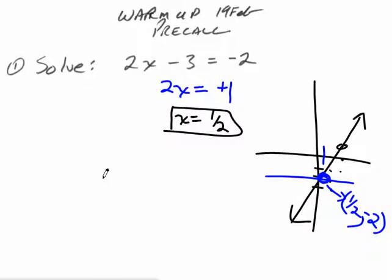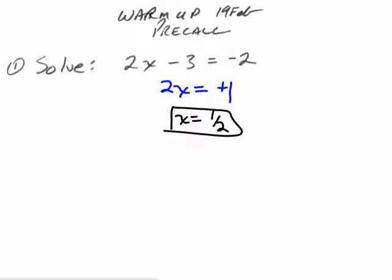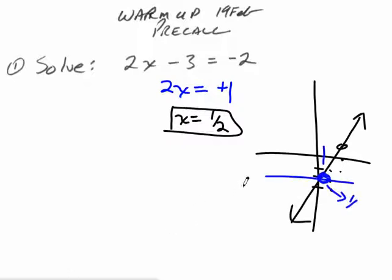The warm-up was: solve 2x minus 3 equals negative 2. And you said that x was one half. Hopefully I don't have to show you that — that works nicely. You could have graphed it too. If you knew how to graph things, you could graph 2x minus 3 and see when it equaled negative 2. You'd see that it crossed at (1/2, -2), so an x of one half gives a value of negative 2. We don't graph things in this class yet, but you will pretty soon.